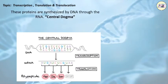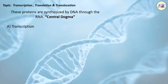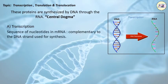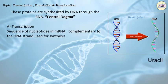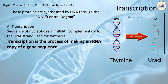Transcription, Translation and Translocation. These proteins are synthesized by DNA through RNA. This is called the Central Dogma. The sequence of nucleotides in mRNA being produced is always complementary to the DNA strand used for synthesis. There is uracil in RNA instead of thymine in DNA. This process of RNA synthesis is called Transcription.